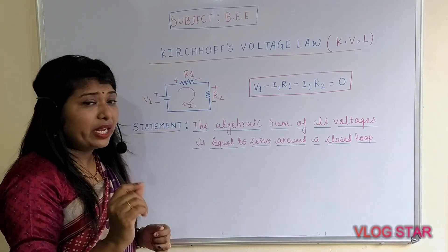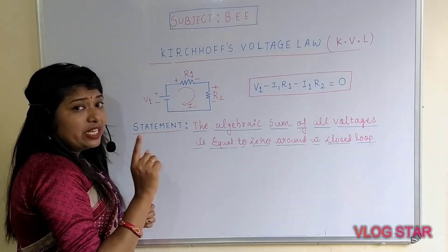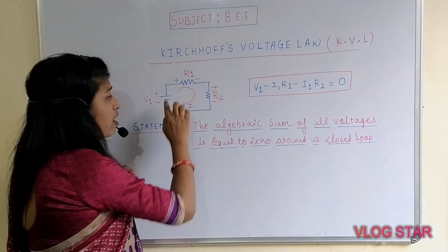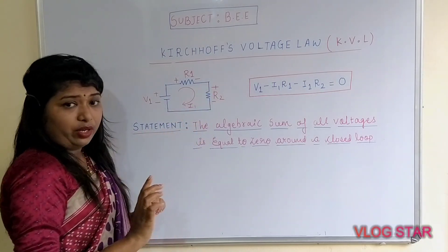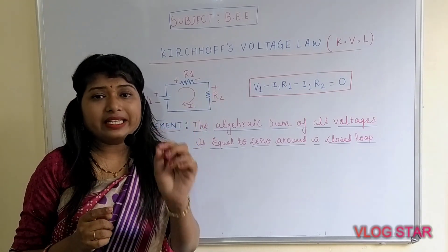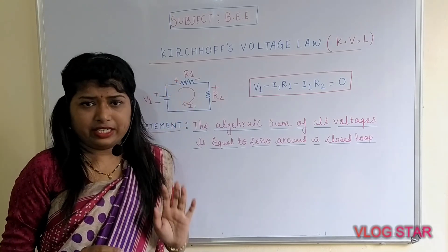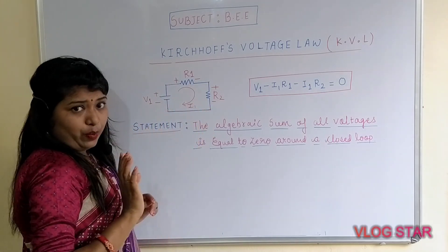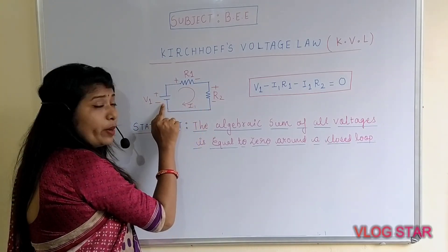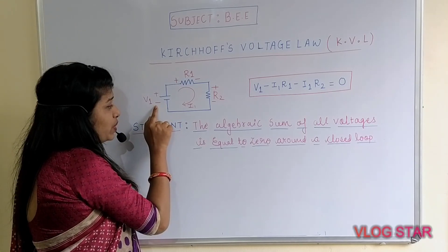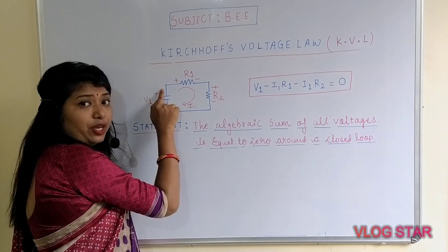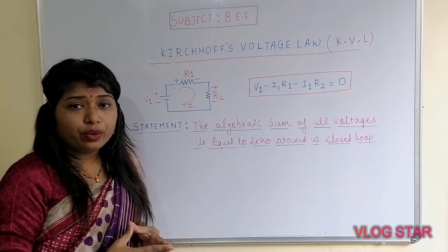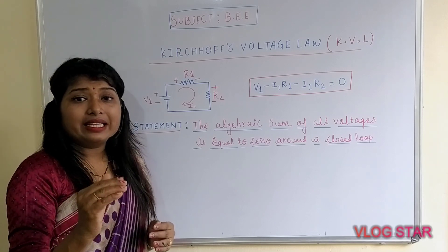Let's begin. In this circuit, let's consider the current flowing is i1. First, you have to assign the current direction in the clockwise direction. By default, this is the lower potential so you assign a negative sign there, and this is the higher potential so you assign a positive sign there.